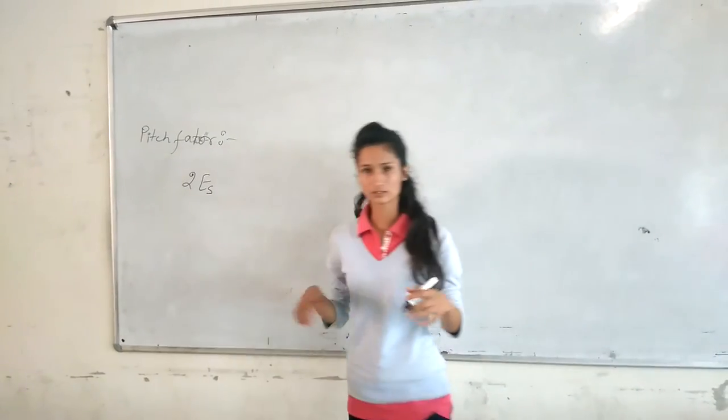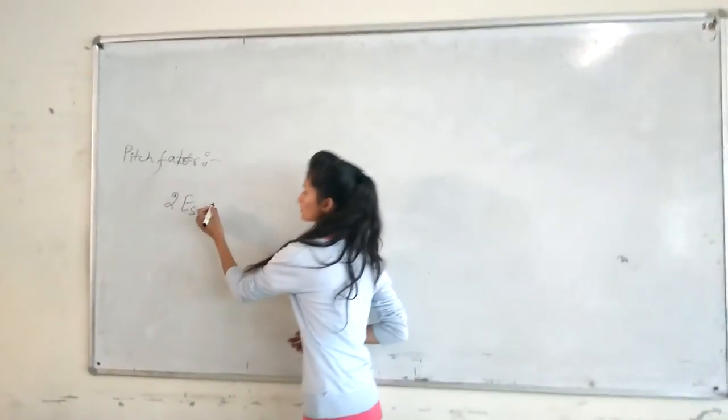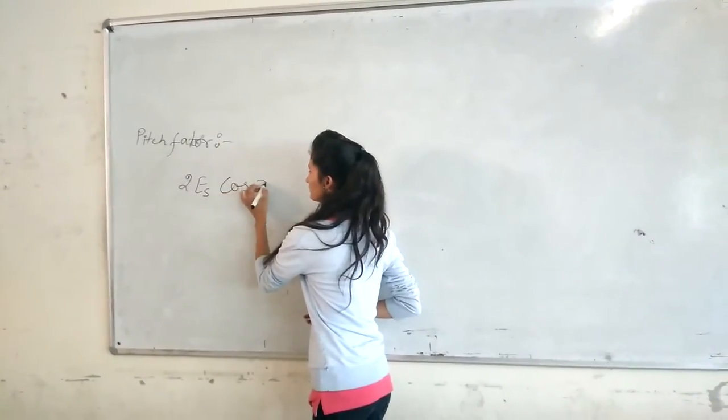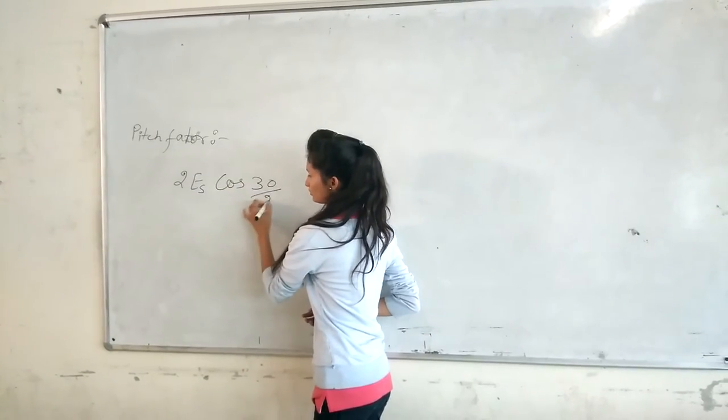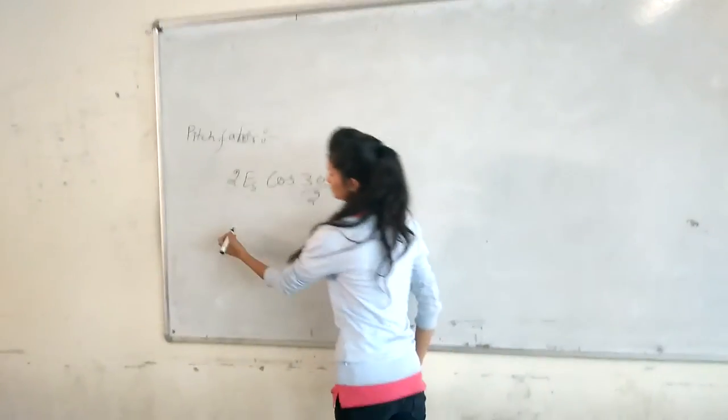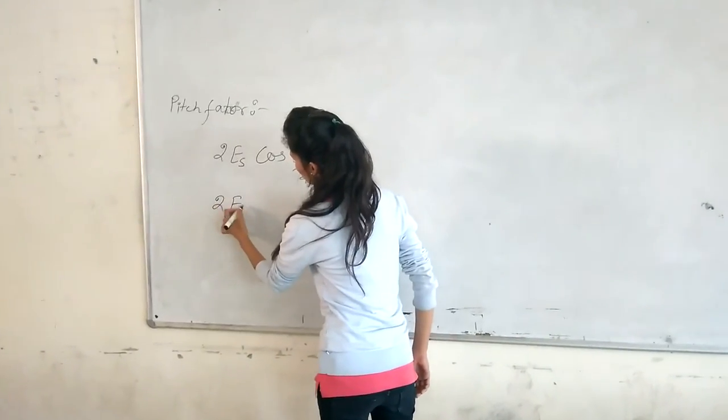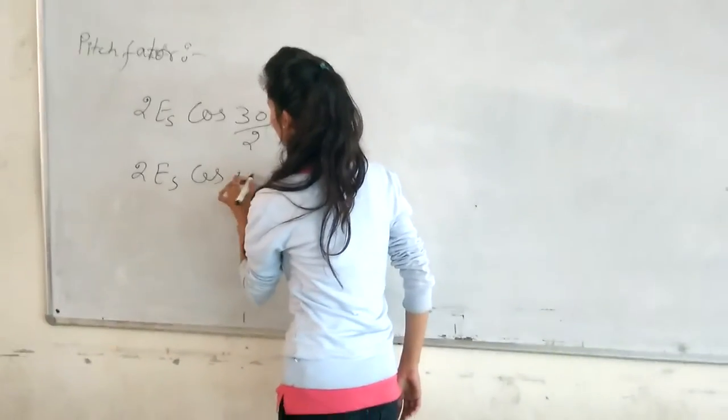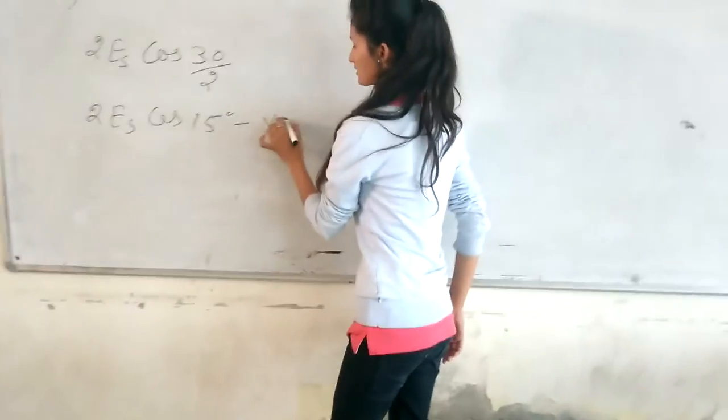Short-pitched by 30 degrees, divide by 2, gives us 15 degrees. This pitch factor is 2ES cos 15 degrees. This is the pitch factor.